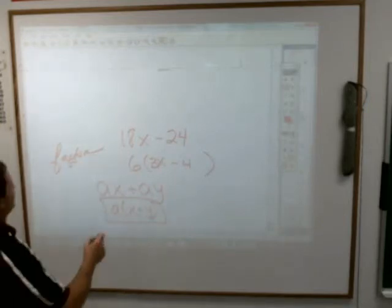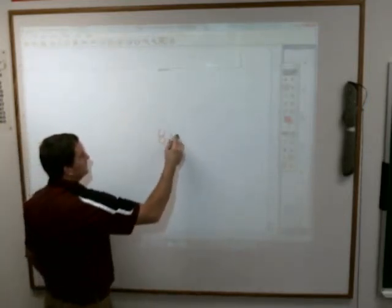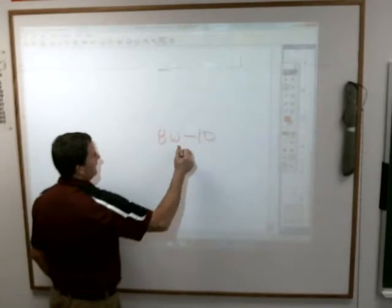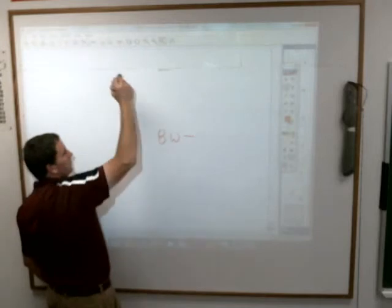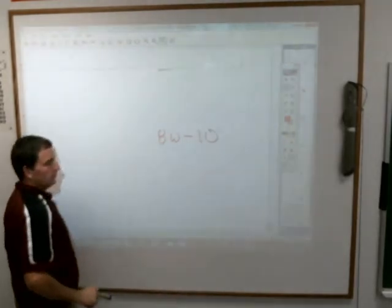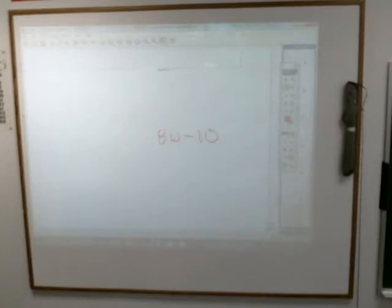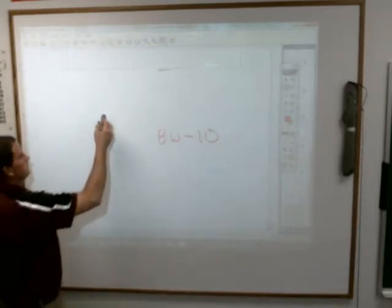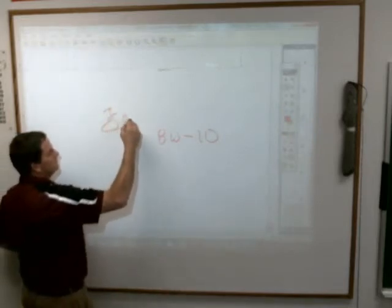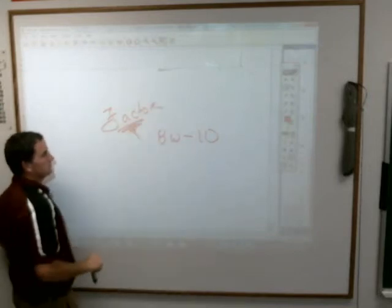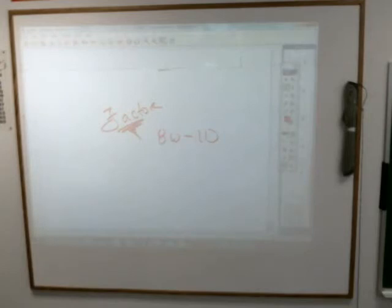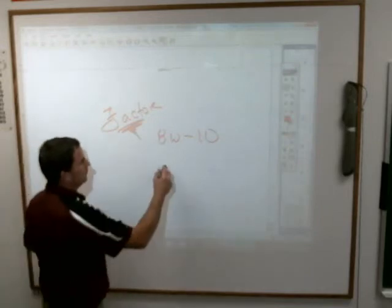Let's see what else. How about this one? aw minus 10. You're asked to factor aw minus 10. What can you take out of both aw and minus 10? Savannah? Two. And then what are you left with?